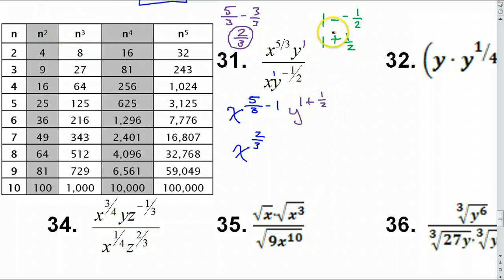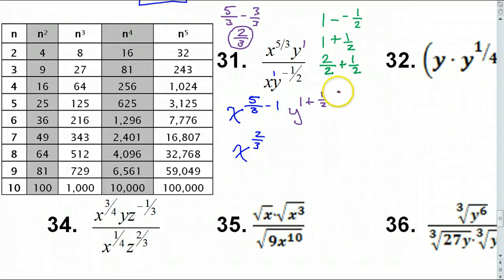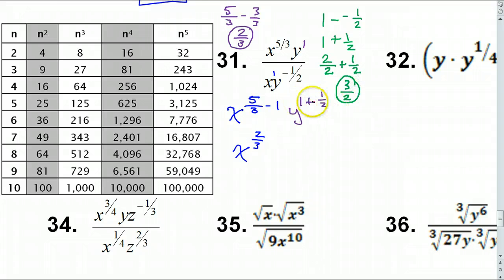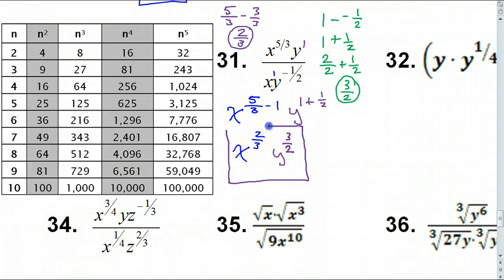For the Y's: 1 plus 1/2. Since 1 equals 2/2, I have 2/2 plus 1/2 which equals 3/2. So I will have Y to the 3/2 power, and that is the final answer for number 31.